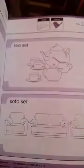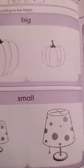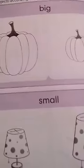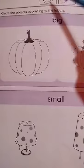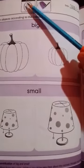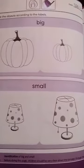Open your math workbook. Our page number is 14. All children, open page 14. On this page the question is: circle the objects according to the labels.